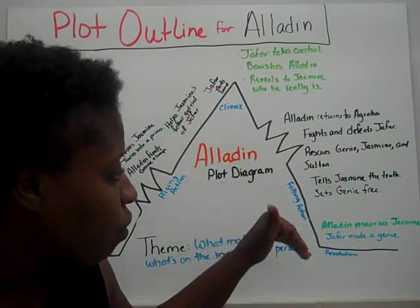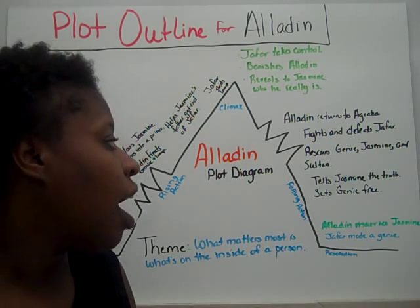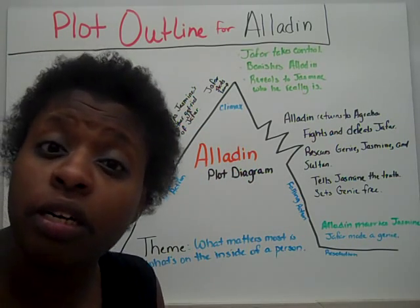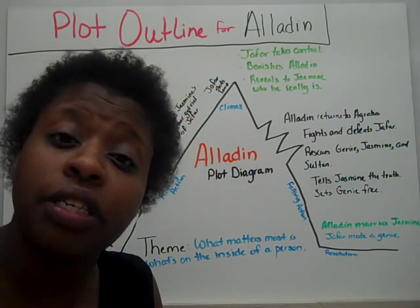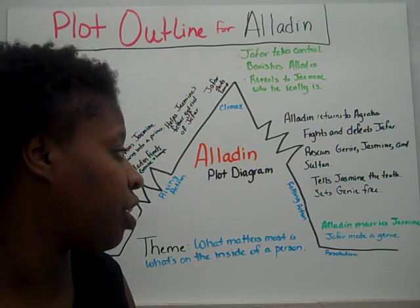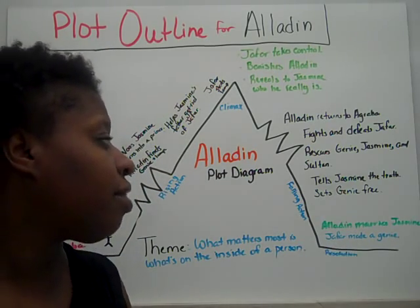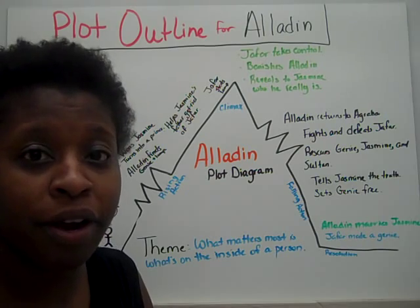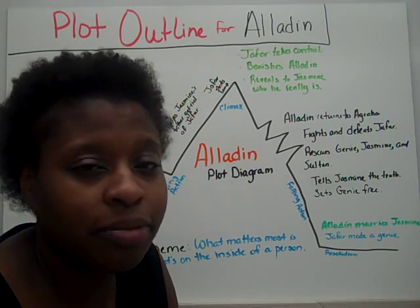In the resolution, Jafar is made a genie — Aladdin tricks him into turning himself into a genie. And then Aladdin is allowed to marry Jasmine.